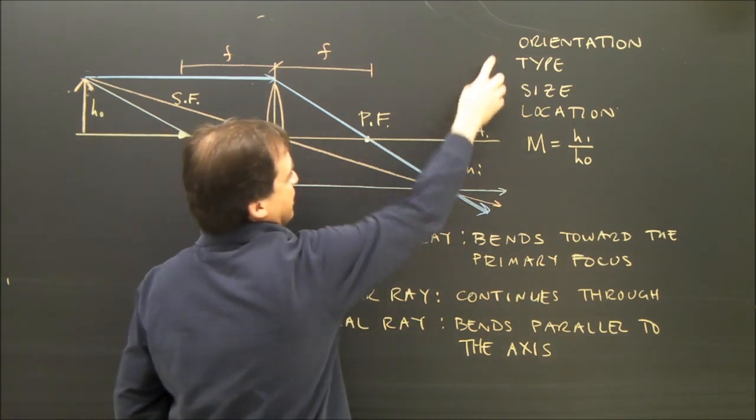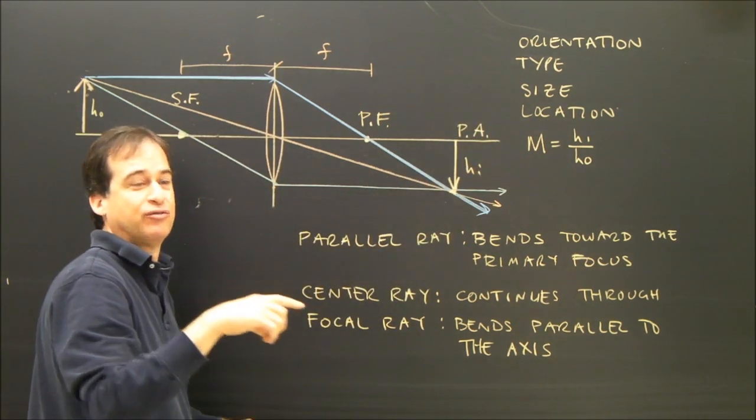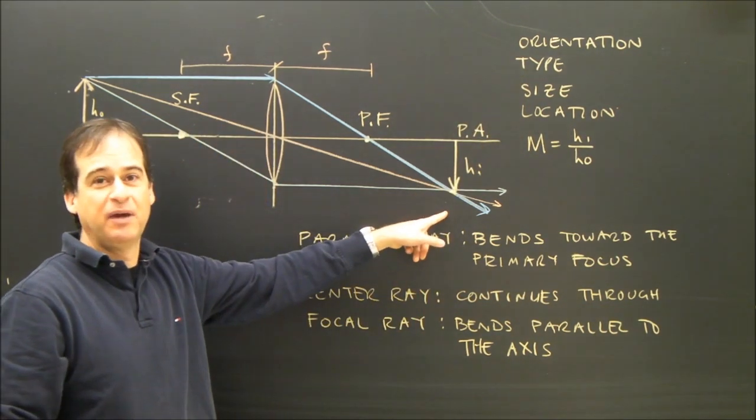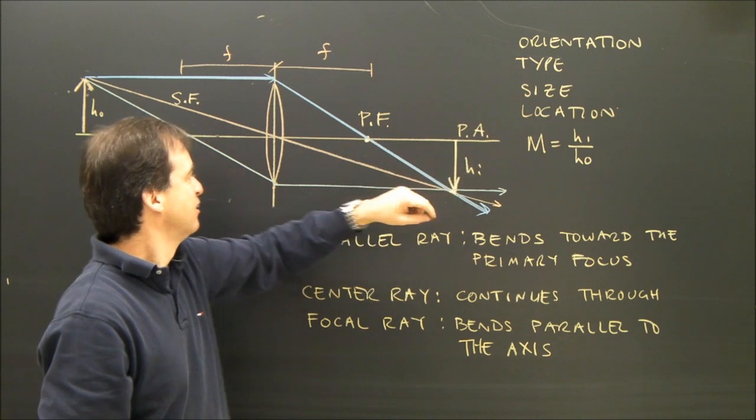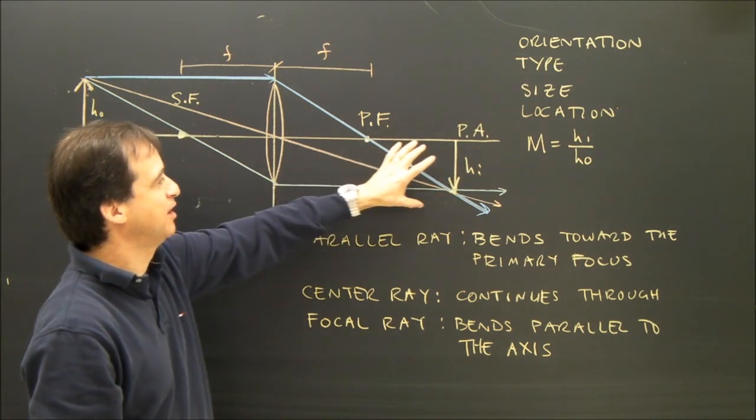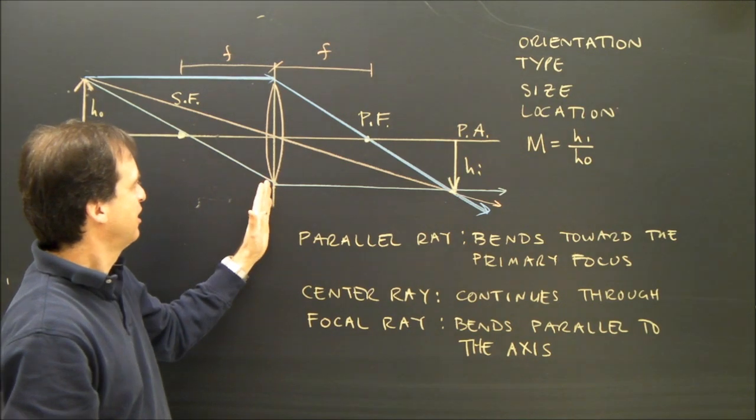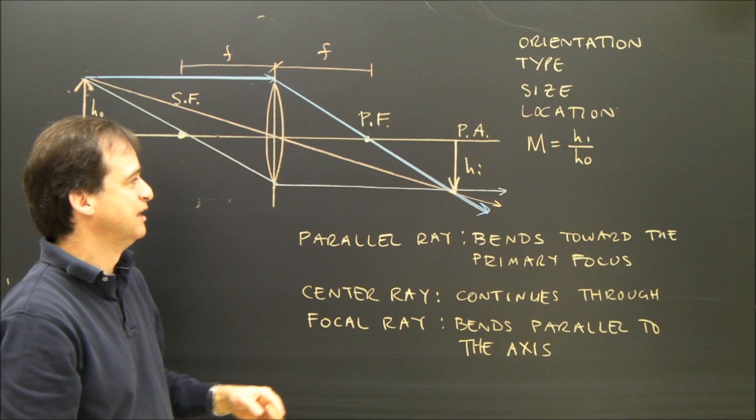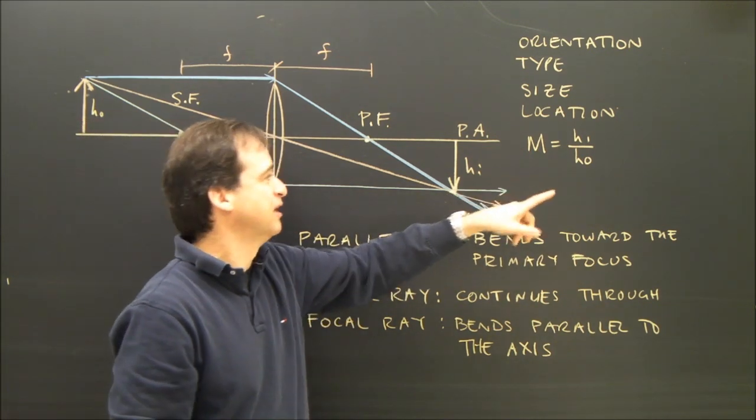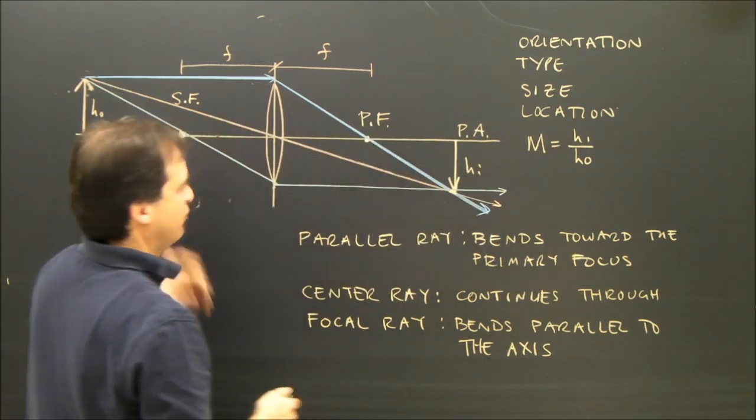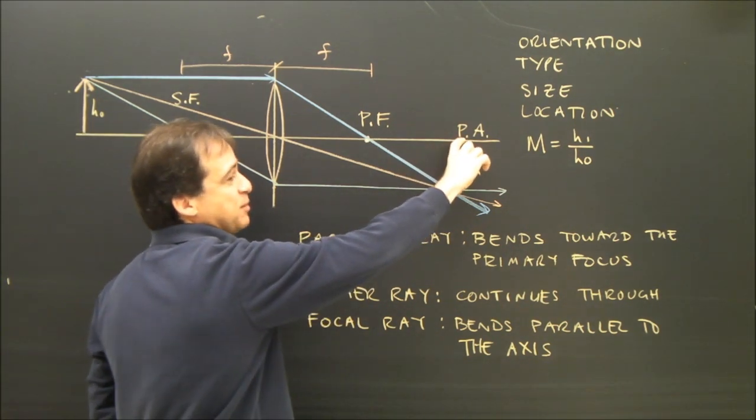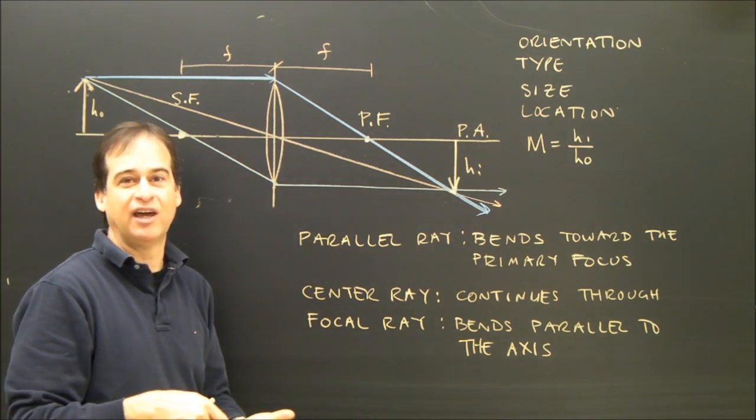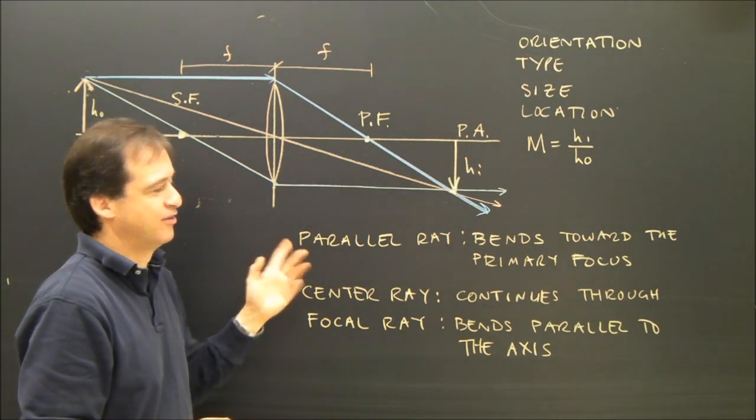So let's take a look. Orientation, it's upright or inverted. This one's inverted. Type, real or virtual. The three rays met, so that is real. The size, I'm going to estimate it's smaller. The location, I have to measure and see if it was closer or further from the lens. And the magnification is a formula, HI over HO, height of image over height of object. If I measure this, this might be 10 centimeters. The height of the object might be 11 centimeters. So I calculate that, and I get an answer, and there are no units for the answer.